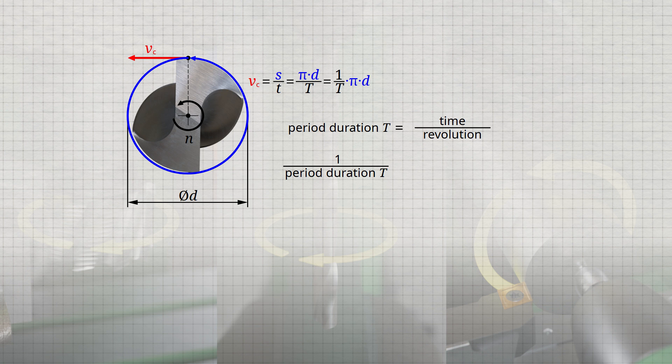The reciprocal no longer indicates the time per revolution, but the revolutions per unit of time. For example, 200 revolutions per minute correspond exactly to the concept of rotational speed. Therefore, we can directly interpret the reciprocal of the periodic time as the rotational speed of the spindle N.